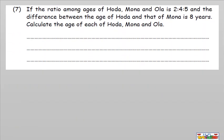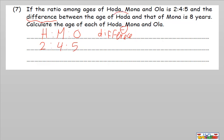Question number seven: if the ratio among ages of Hoda, Mona, and Ula — so we have Hoda, Mona, Ula — ratio between them is 2 to 4 to 5. And the difference — remember, difference means minus. When we have three numbers, we can't do minus between all three — he must specify between which two. He says the difference between Hoda and Mona is 8. Two minus four or four minus two equals two.